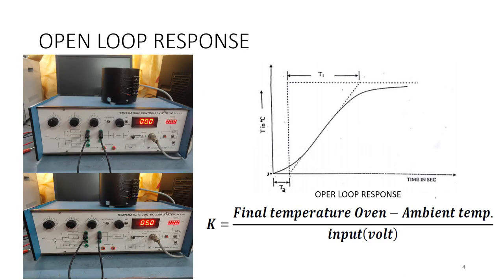Moving on to the open-loop response — oven parameter identification is the first step. In open-loop testing, the oven is driven through the P amplifier with its maximum gain set to 10. The input to the amplifier is adjusted through the reference potentiometer near switch S2, and the input can be seen on the digital display. We set it to 5°C, which corresponds to 50 millivolts (since 1°C corresponds to 10 mV). With a gain of 10, the output to the driver circuit is 0.5 volts.